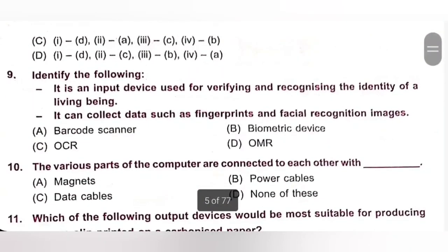Ninth. Identify the following. It is an input device used for verifying and recognizing the identity of a living being. It can collect data such as fingerprints and facial recognition images. A. Barcode scanner. B. Biometric device. C. OCR. D. OMR.